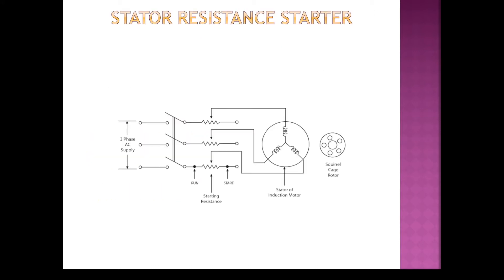This is the stator resistance starter. Here we can see the stator of the induction motor and the squirrel cage rotor. For squirrel cage rotor, we can apply the stator resistance starter. Each resistance is inserted in series with each phase of the stator of the induction motor. There are two positions: start and run position.